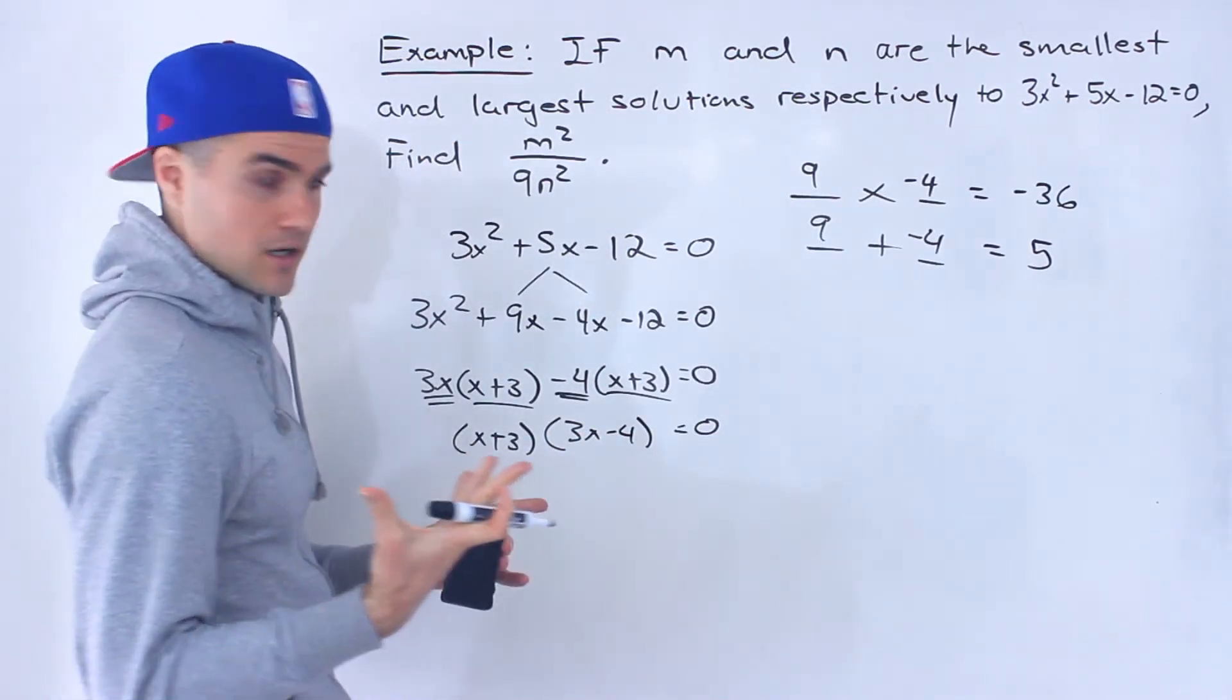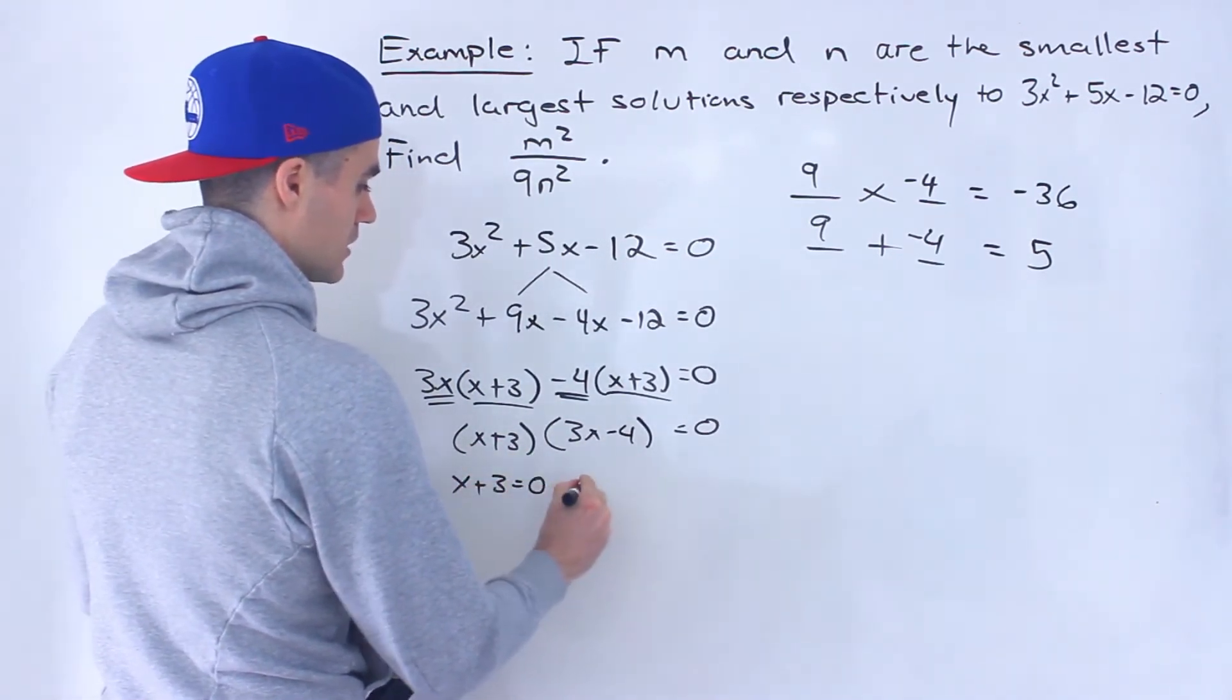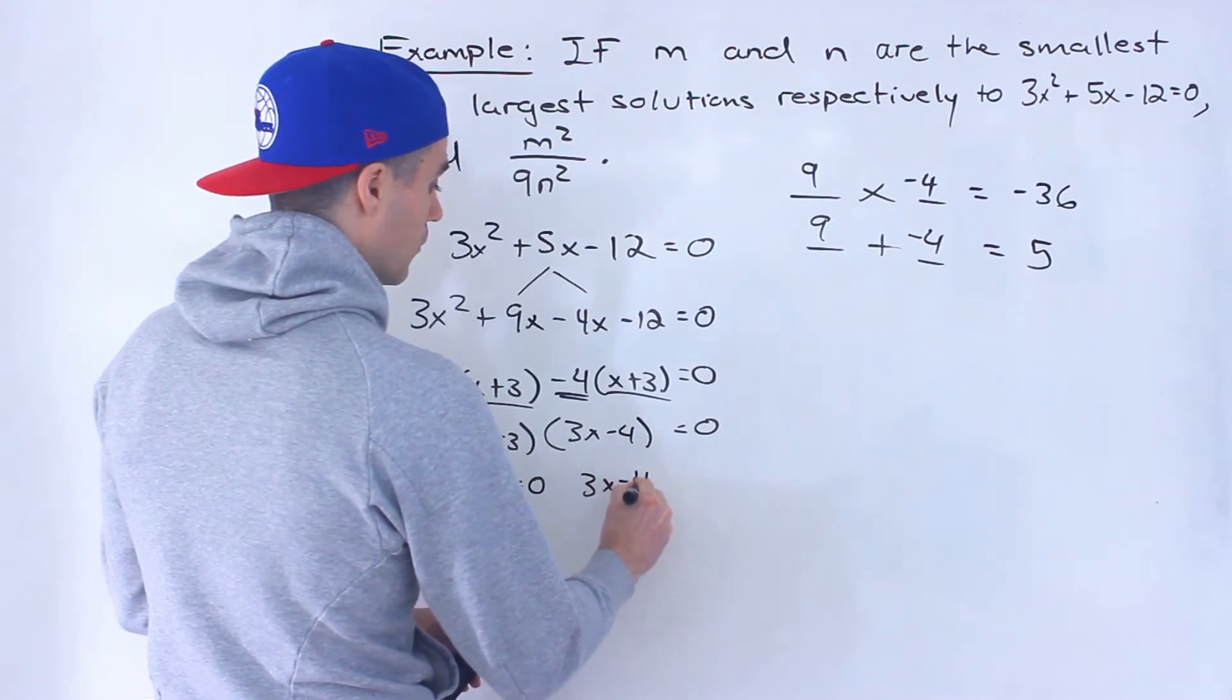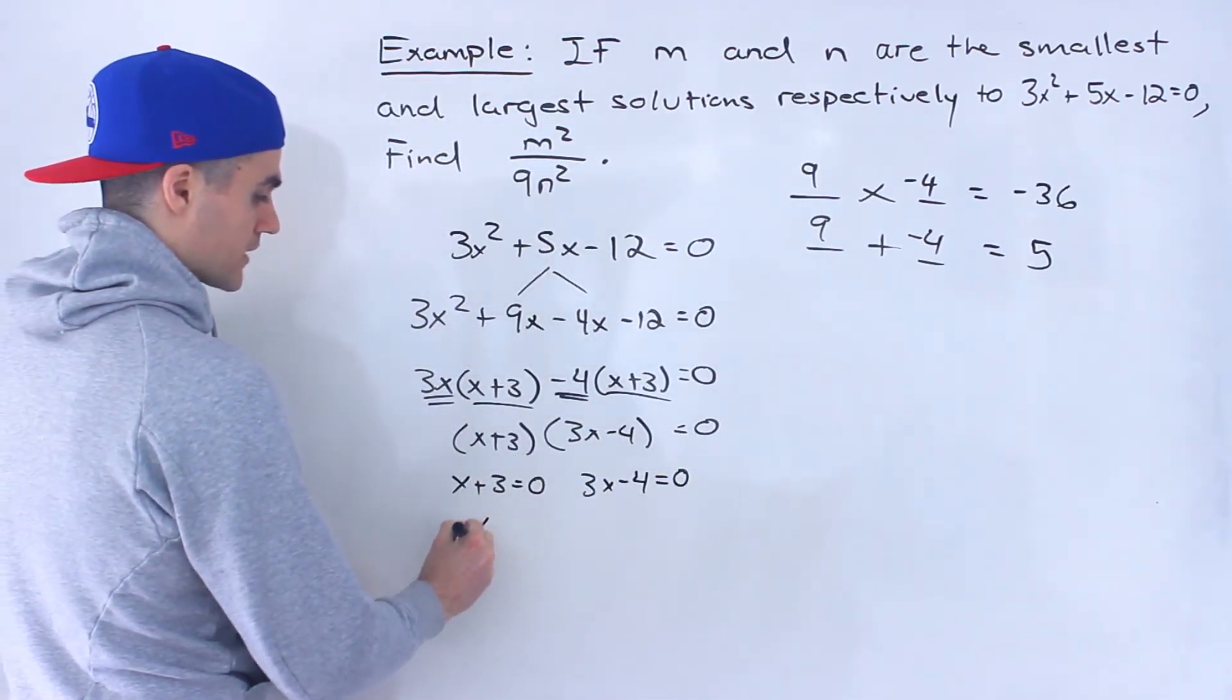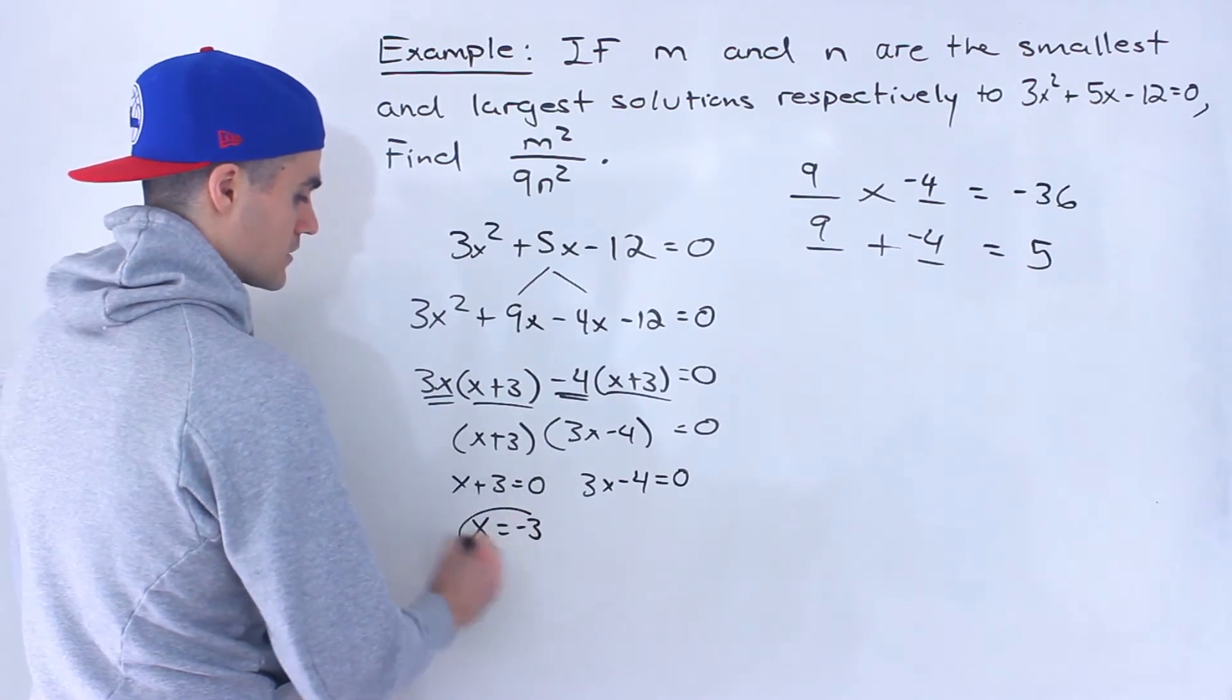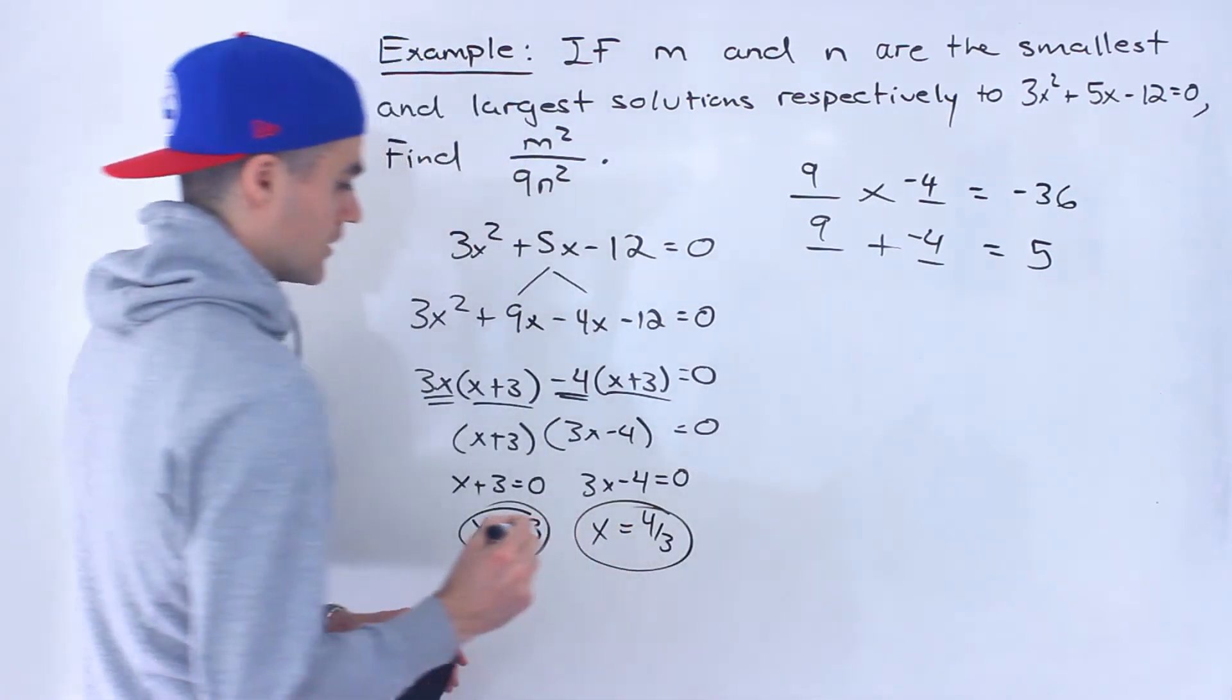And so from here we can get the solutions by making each bracket equal to 0, finding out what x value makes the respective bracket 0. So we'd have x equals negative 3, and then over here we'd have x equals 4 over 3.